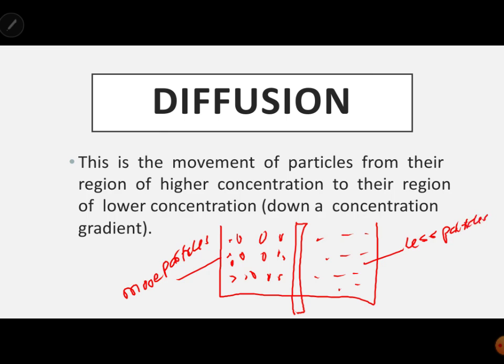Particles in this case represent concentration. More particles means higher concentration; fewer particles means lower concentration. So particles move from where concentration is high to where it is low, until they reach what we call dynamic equilibrium.